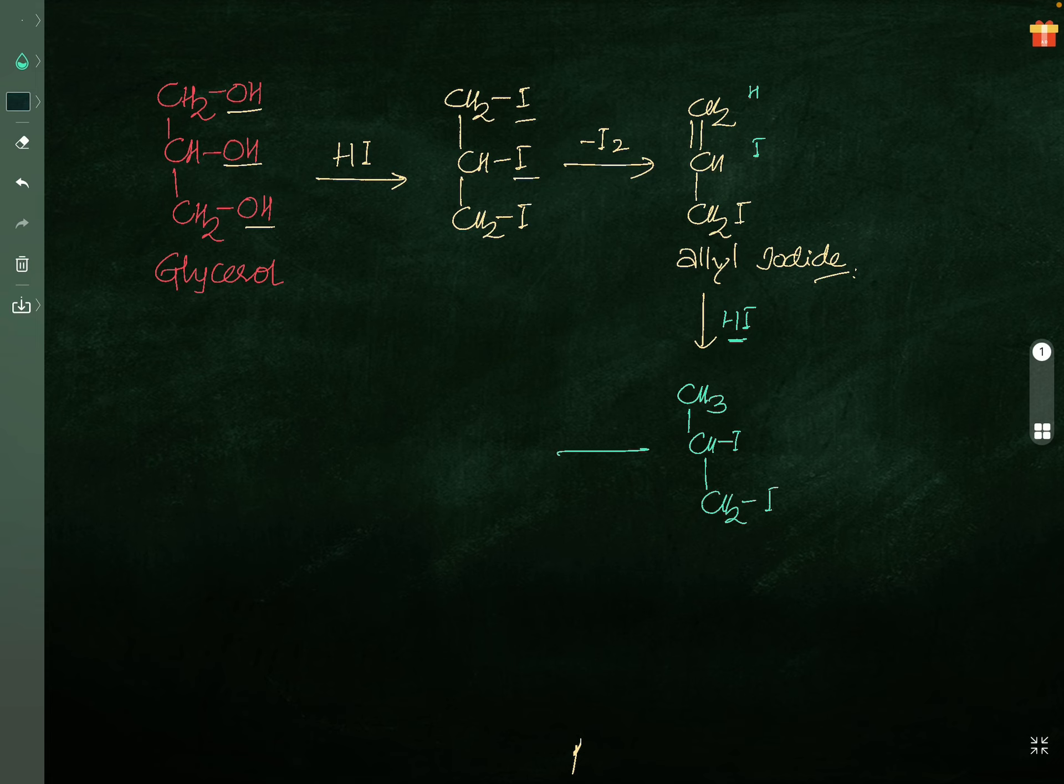Again, we are getting the same problem - two iodines are side by side. So minus I2, and it becomes CH3-C=CH2. This means you now have propene.